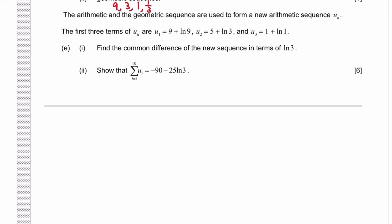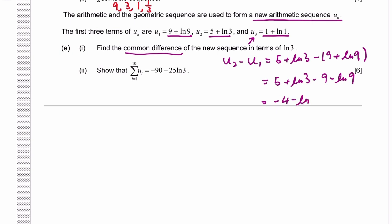So now what? We have a new arithmetic sequence UN. The first three terms of UN is 9 plus ln 9, 5 plus ln 3, and 1 plus ln 1. Find the common difference. So again, it's just second term minus first term. You could also do the third term minus the second term. It would be the same. So it's 5 plus ln 3 minus 9 plus ln 9, minus 9 minus ln 9. 5 minus 9 is minus 4. ln 3 minus ln 9 by the property of log is ln 3 over 9. 3 over 9 is 1 third. But they want it to be in terms of ln 3. 1 third is 3 to the power of negative 1. So you can drop the negative 1.